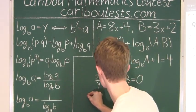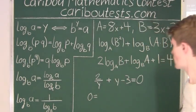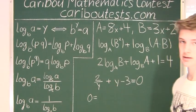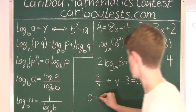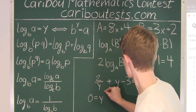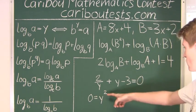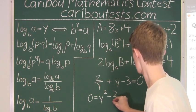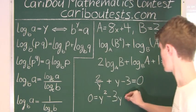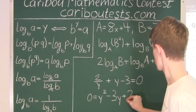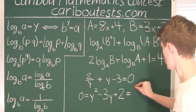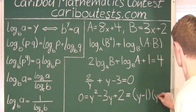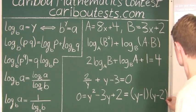Multiplying everything by Y to eliminate the denominator gives Y² − 3Y + 2 = 0. Factoring this yields (Y − 1)(Y − 2) = 0.